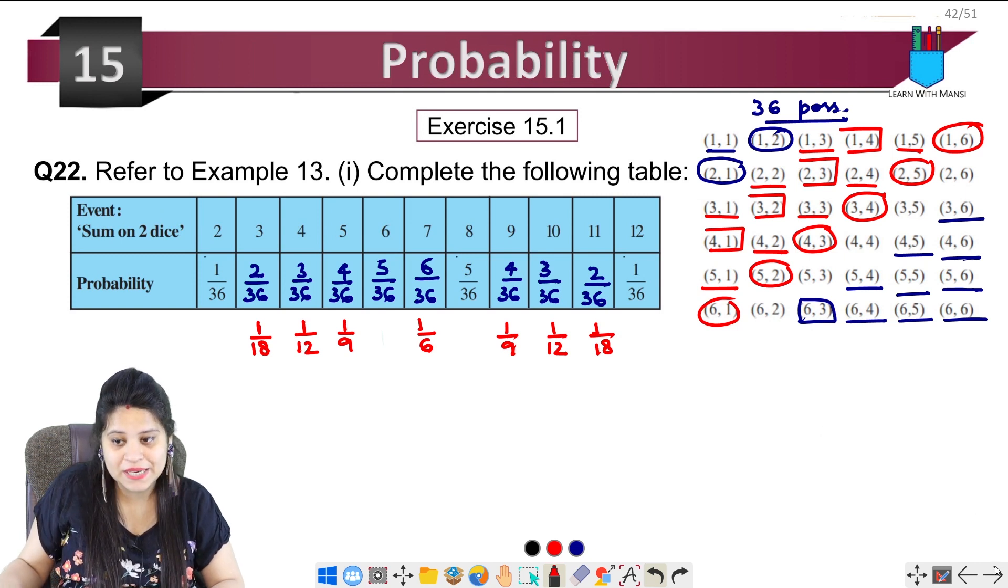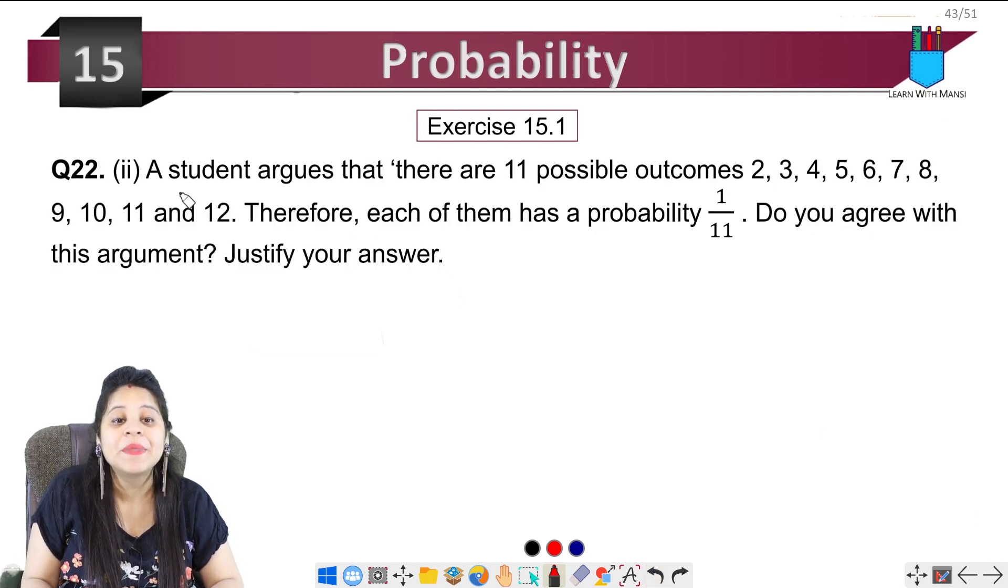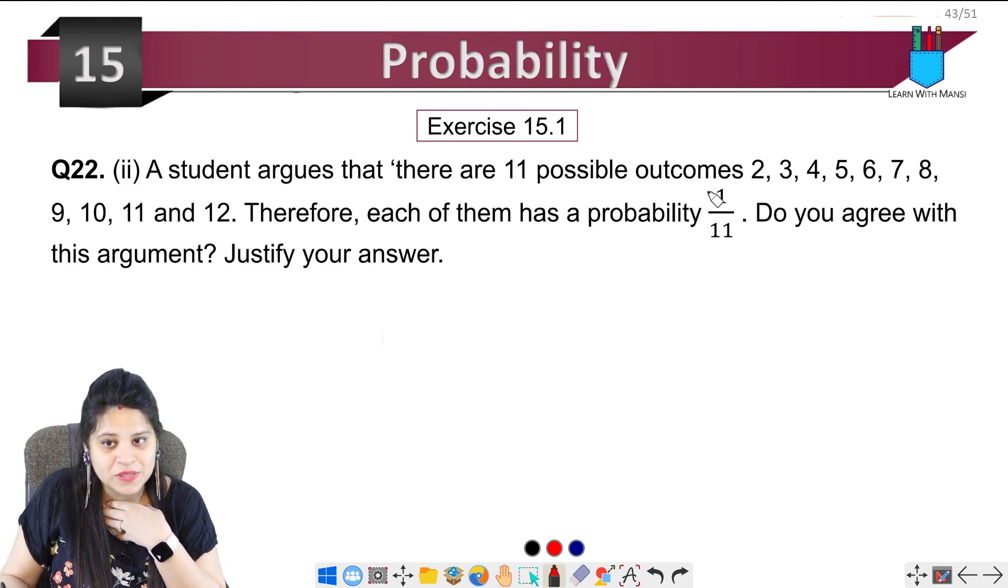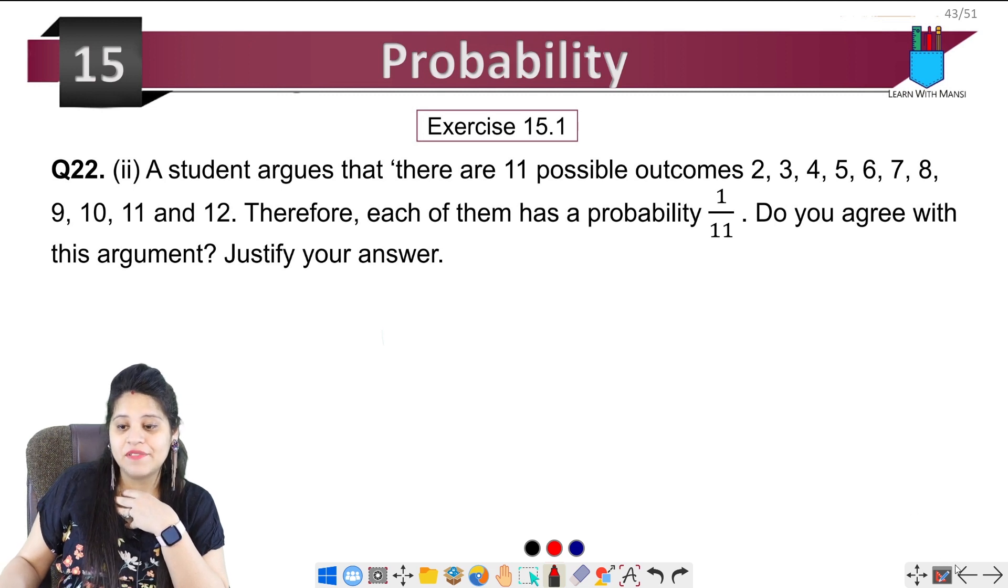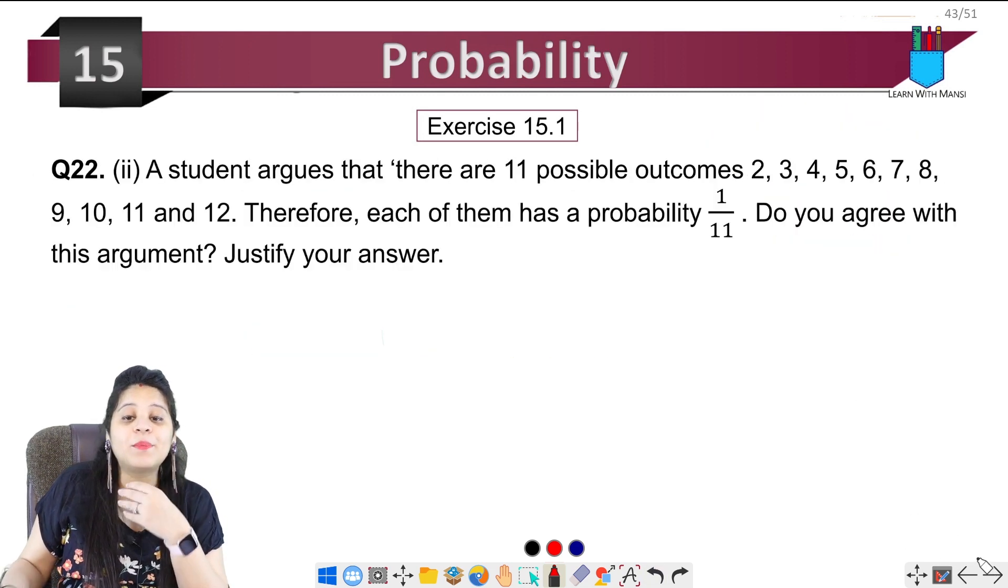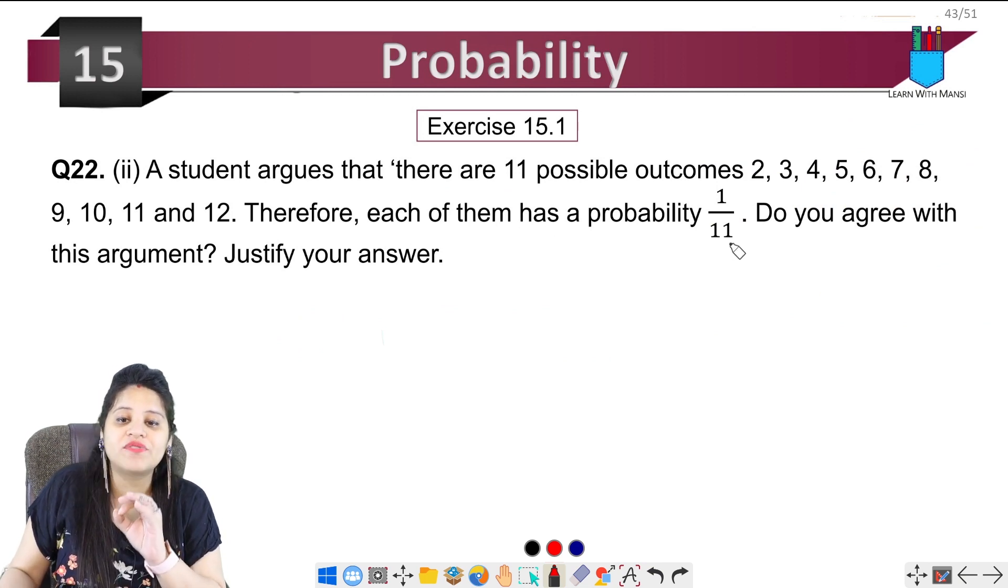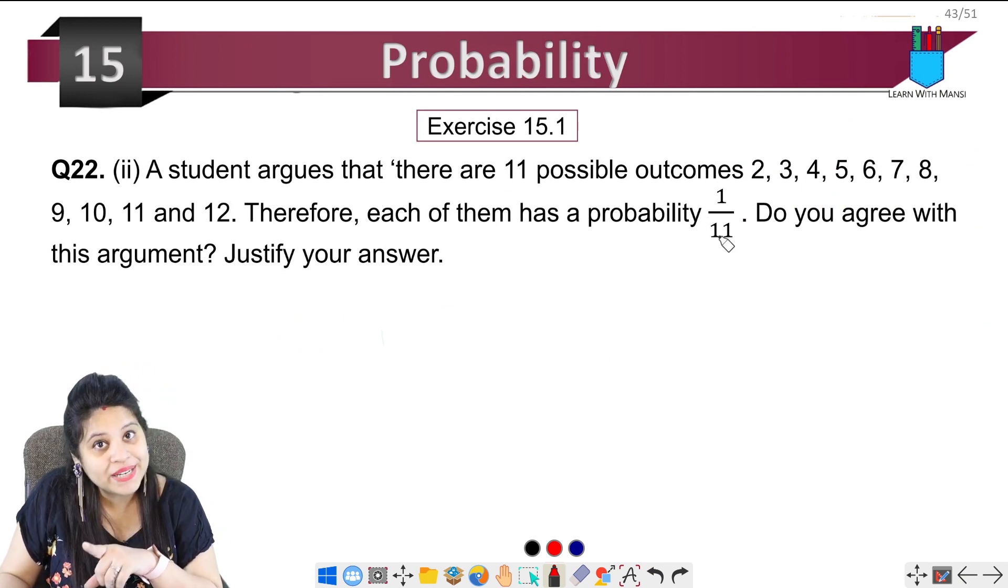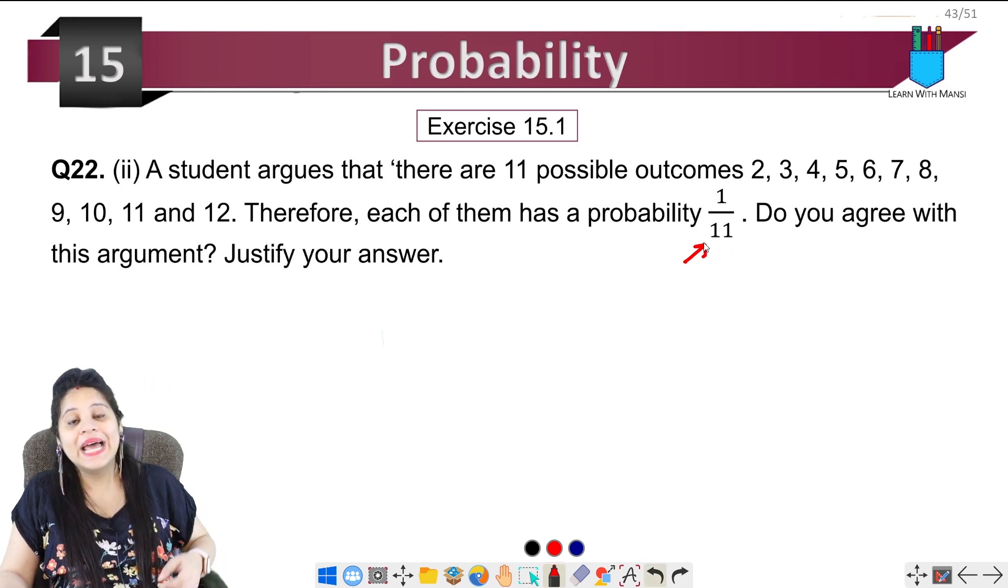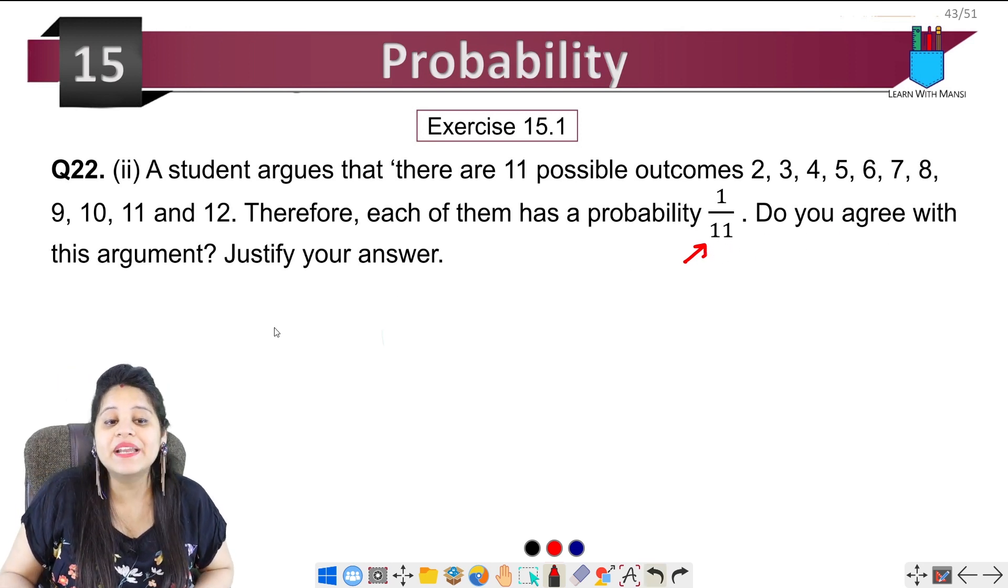So this is our first part. The question's second part: a student argues that there are 11 possible outcomes - 2, 3, 4, 5, 6, 7, 8, 9, 10, 11, 12. So he says here there are 11 outcomes, so we have probability. Therefore each of them has a probability 1 upon 11. So he says here in every case probability 1 upon 11. Do you agree with this argument? Justify your answer.